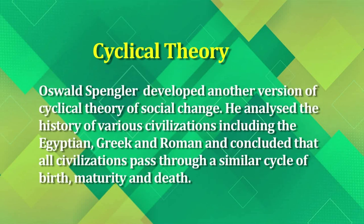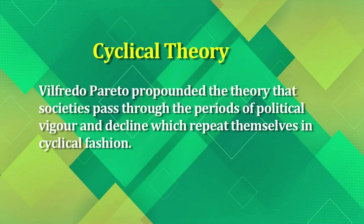According to Spengler, who developed a version of the cyclical theory, the history of various civilizations — including the Egyptian, Greek, and Roman — shows that all civilizations go through the phases of birth, maturity, and death. Then there is Vilfredo Pareto, who propounded that societies pass through periods of political vigor and decline, which repeat themselves in a cyclical fashion.